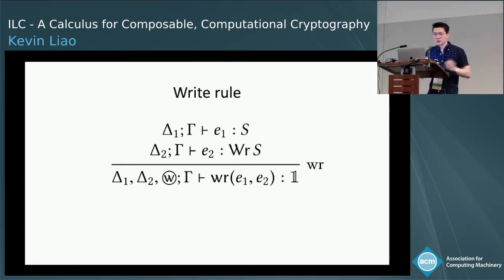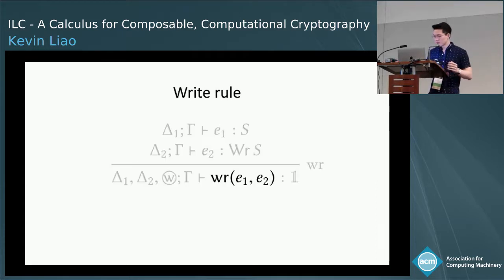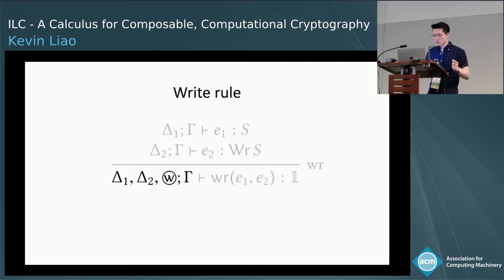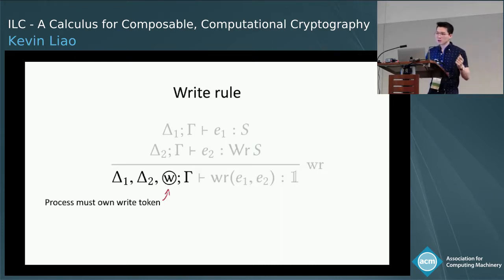In the write rule, the expression evaluates E1 to some value, evaluates E2 to some write endpoint, and sends that value across the channel. We again split the affine context, and importantly, in order to type this write expression, the process must first own the write token.